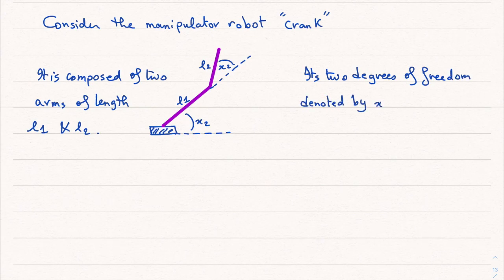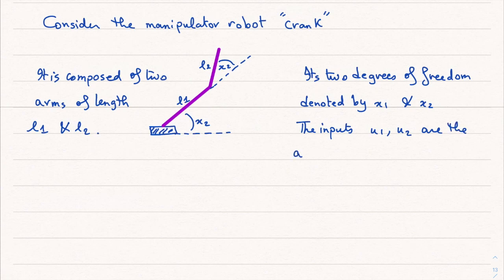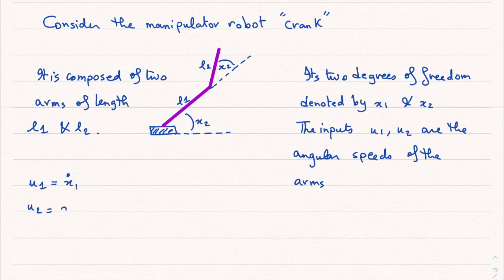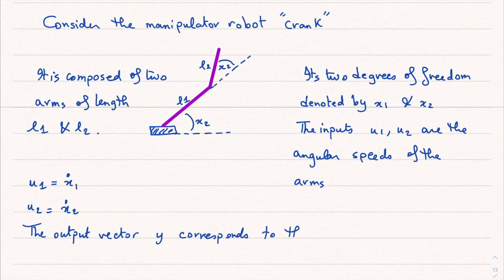It has two degrees of freedom, so the states are x1 the angle and x2 the angle. The inputs are the couples or the torques that we apply on each arm, so u1 is x1_dot and u2 is x2_dot. The output vector corresponds to the position of the end of the second arm, so here we have y1 and y2.